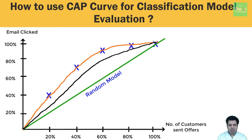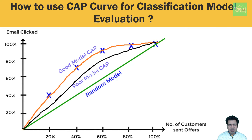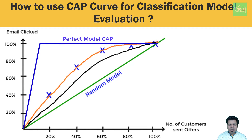The idea is to compare different classification models to understand which model is performing better so that we can pick the better-performing model for making predictions. By drawing these curves for each model, we can also see how much additional gain a particular model scores when switching from one model to another — that is, how much additional gain the logistic regression model scores compared to the support vector machine. We can clearly see that the logistic regression model is the better model here. So we have a random model CAP, a poor model CAP, and a good model CAP.